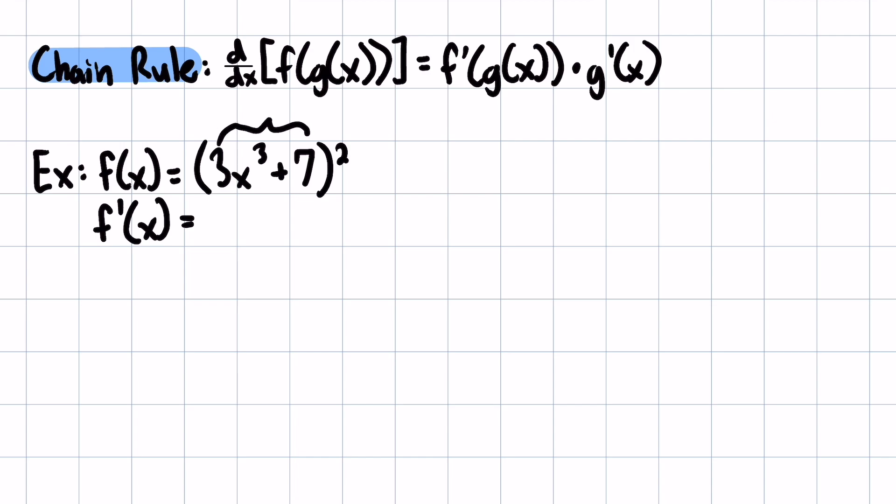...3x cubed plus 7, and then the outside function is the fact that we're squaring it. So the first thing we're going to do is we just treat the inside part like it's just x. And we are just going to take the derivative of the fact that it's squared. So what would you do if you had x squared? You would take down the two and then subtract one from the power to get one, but what's in the parentheses stays the same.